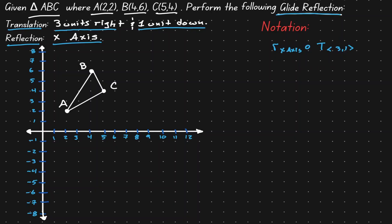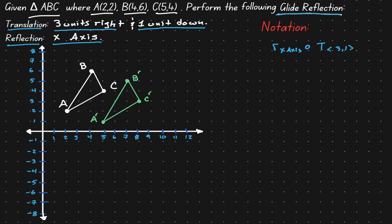Now let's actually perform the glide reflection. Let's move every point 3 units to the right and 1 unit down. This gives us the new location for C, which we call C'. Then we move point B 3 units to the right and 1 unit down — that's B'. And now let's move A 3 units to the right and 1 unit down — that's A'. We are done with the translation.